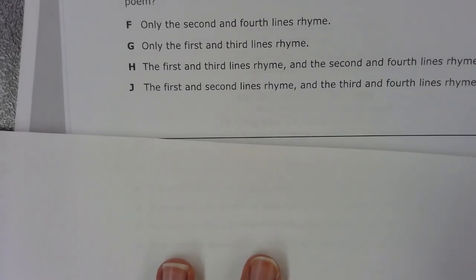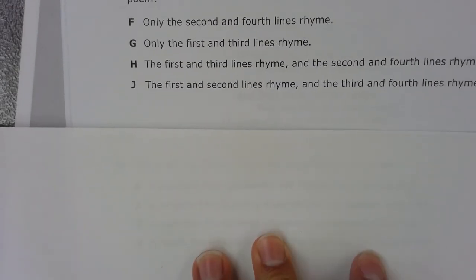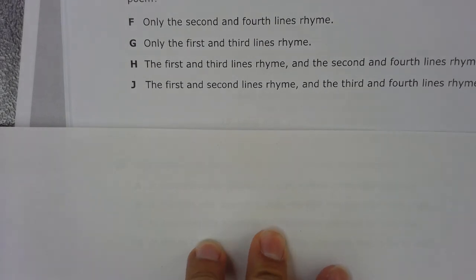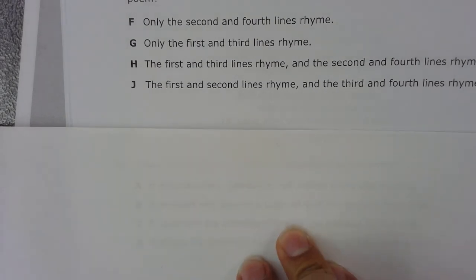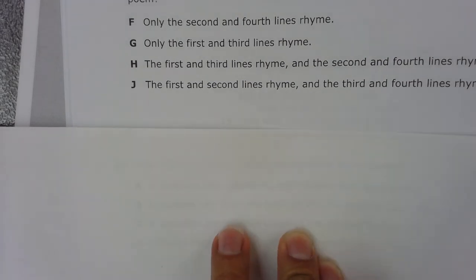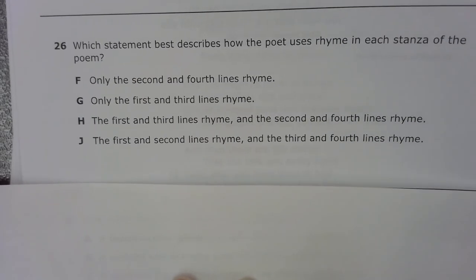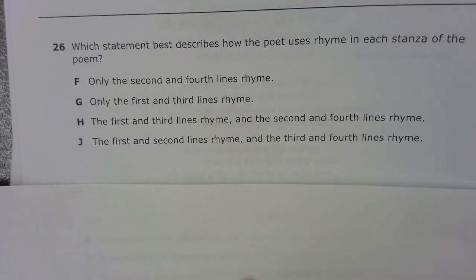Number 26. Which statement best describes how the poet uses rhyme in each stanza of the poem? F. Only the second and fourth lines rhyme. G. Only the first and third lines rhyme. H. The first and third lines rhyme, and the second and fourth lines rhyme.